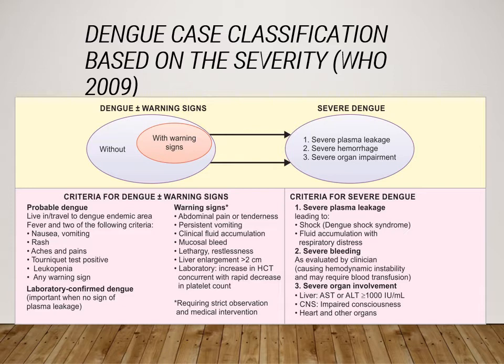'Dengue with or without warning signs' requires either a probable dengue diagnosis — symptoms like fever, rash, positive tourniquet test, body ache, retrobulbar pain — or lab-confirmed dengue via a positive NS1 or IgM test. Warning signs to look for include abdominal pain or tenderness, mucosal bleeding, fluid accumulation, liver enlargement, or an increase in hematocrit value.